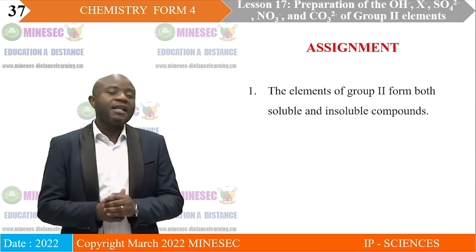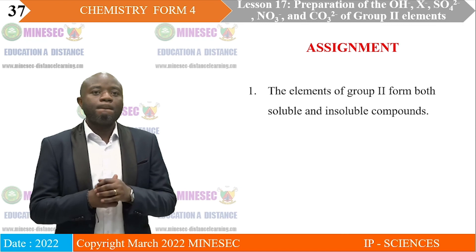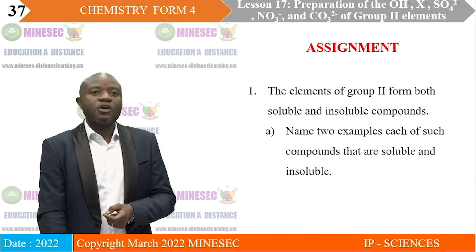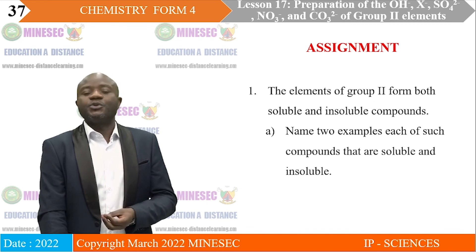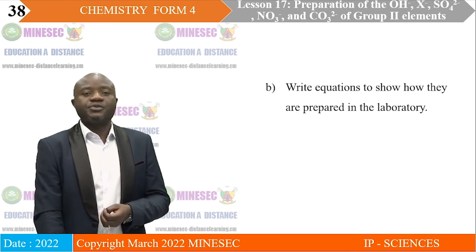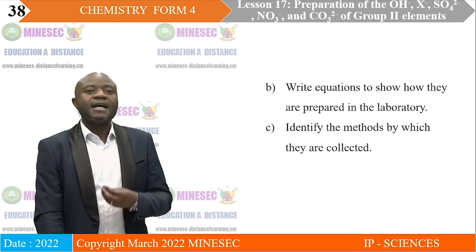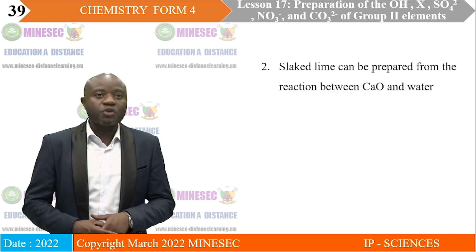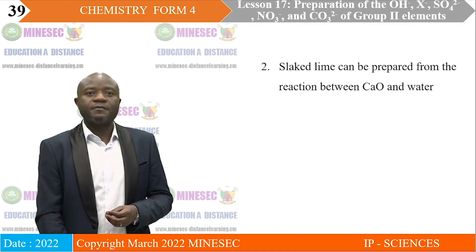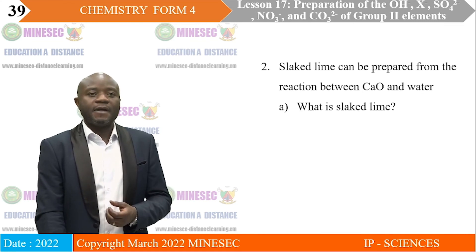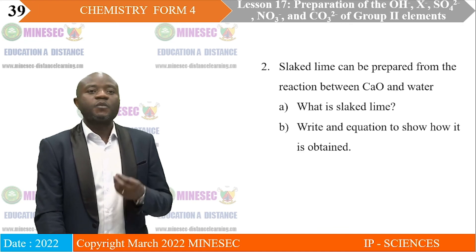Assignment. The elements of Group 2 form both soluble and insoluble compounds. A. Name two examples each of compounds that are soluble and insoluble. B. Write equations to show how they are prepared in the laboratory. C. Identify the methods by which they are collected from solution. Question 2: Slaked lime can be prepared from the reaction between calcium oxide and water. A. What is slaked lime? B. Write an equation to show how it is obtained.